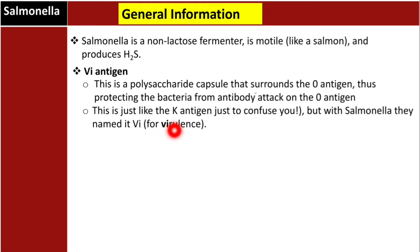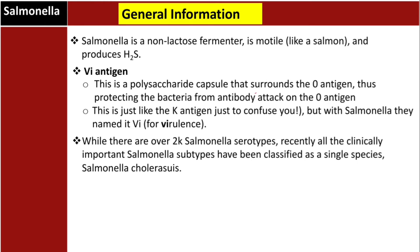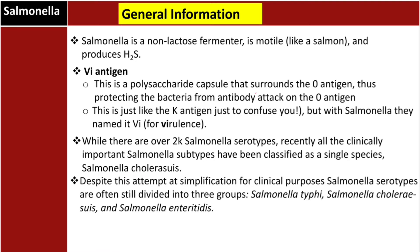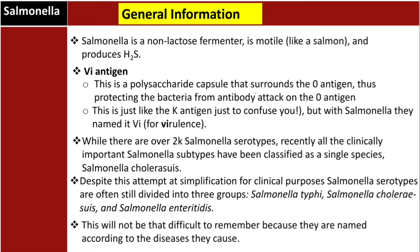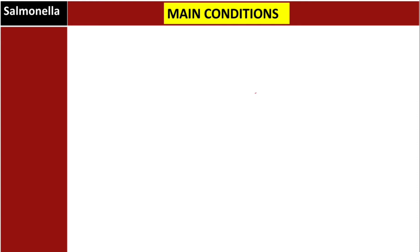While there are over 2,000 Salmonella serotypes, all clinically important subtypes have recently been classified as a single species, Salmonella choleraesuis. Despite this simplification, for clinical purposes Salmonella serotypes are still often divided into three groups: Salmonella typhi, Salmonella choleraesuis, and a third group.